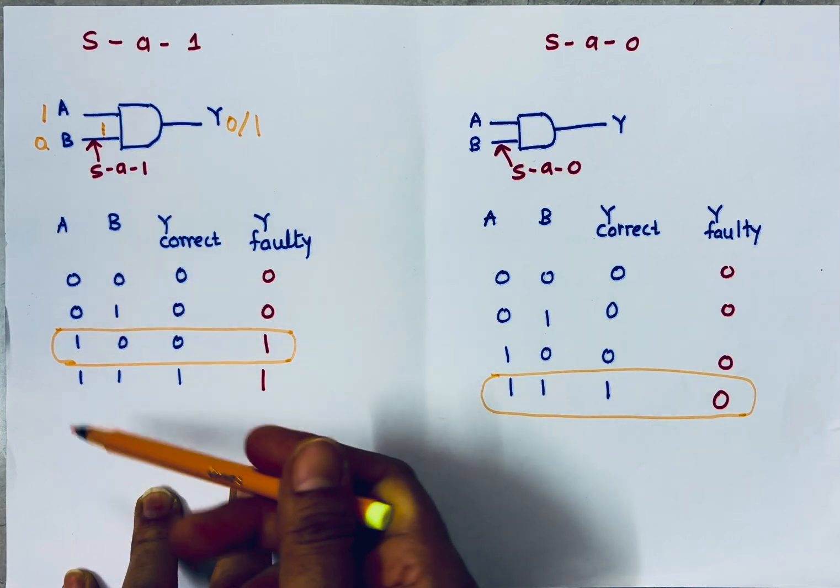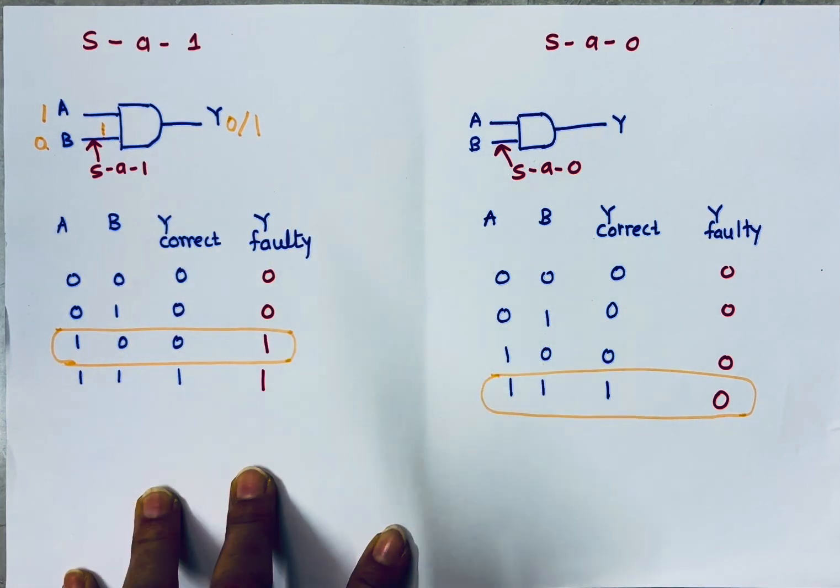To test stuck at 1 fault at input B, the test vector is 1,0. So instead of applying all test vectors, we can simply apply 1,0 and we could identify the fault.